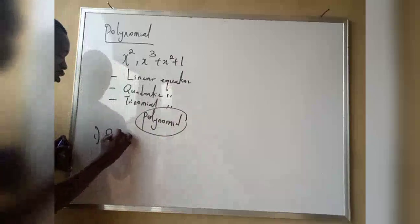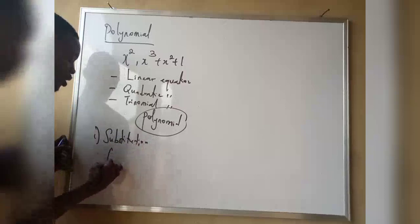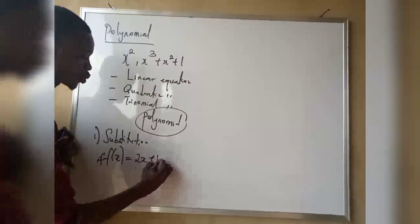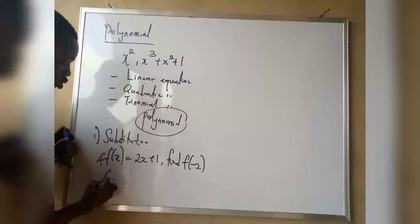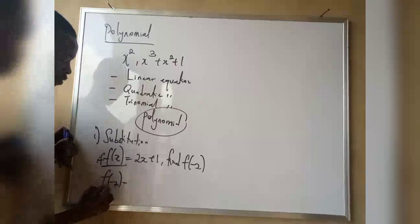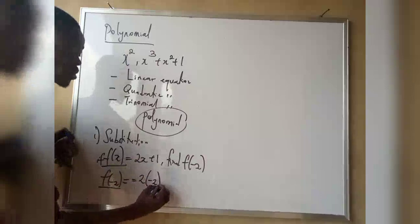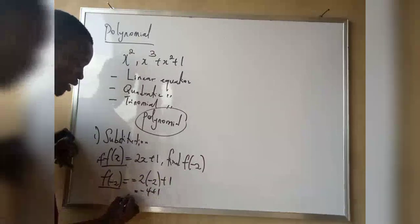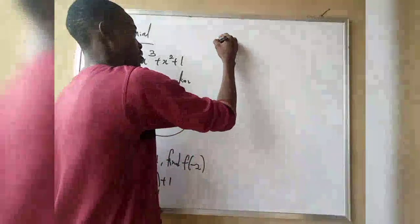The first thing we want to look at under polynomial is what we term as substitution. When we are talking of substitution, we are talking of questions like this: if f(x) equals 2x plus 1, find the value of f(-2). When we compare f(x) and f(-2), anywhere we see x we change it to -2. So 2 times -2 gives us -4 plus 1, and f(-2) gives us -3.